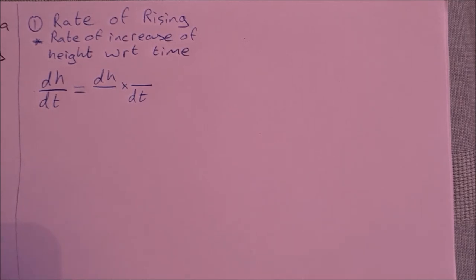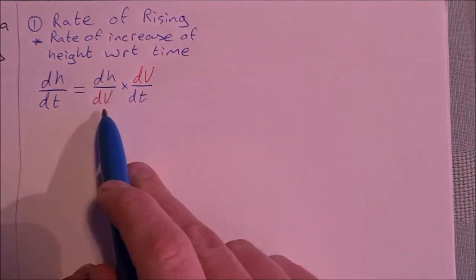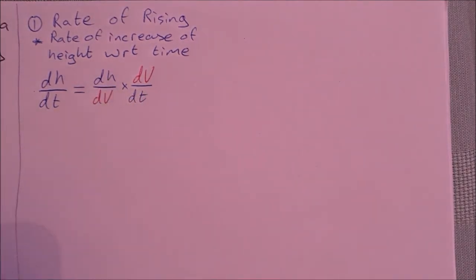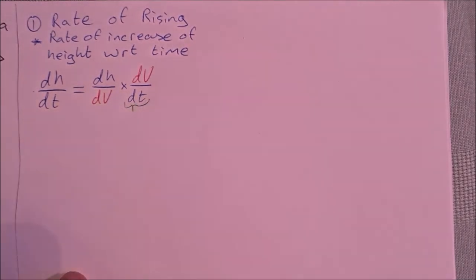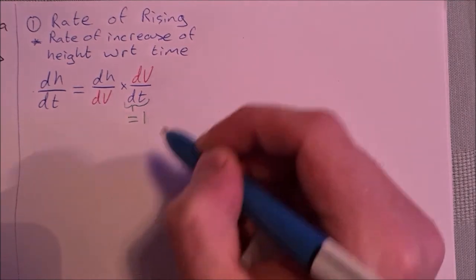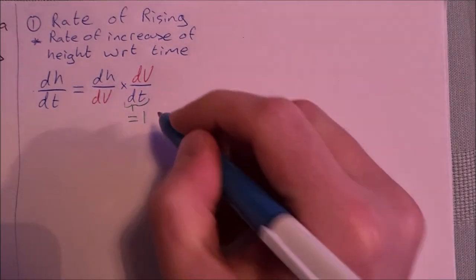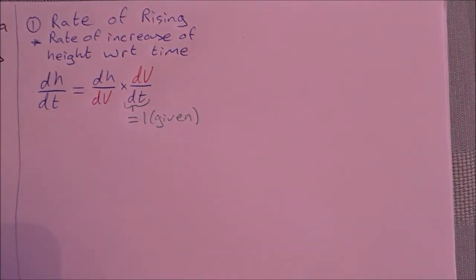Looking at the question, I'm told that water is flowing into the cone at a rate of one cubic meter per minute — that's volume — so dv is going to go in the middle. I have dh/dv times dv/dt. I already know what dv/dt is: it's given in the question as the rate at which the water is flowing into the cone, and that's equal to one cubic meter per minute.